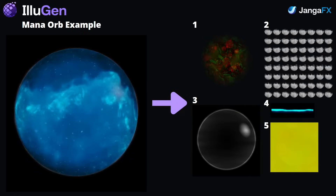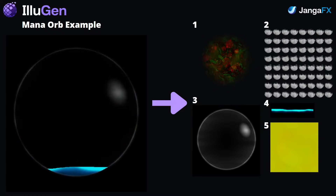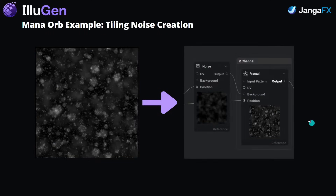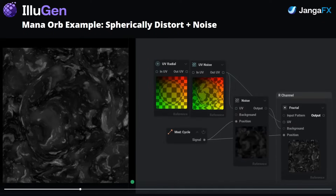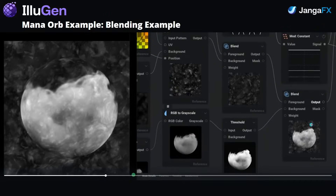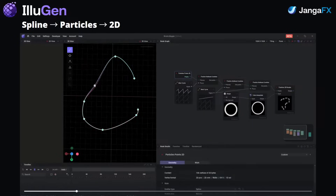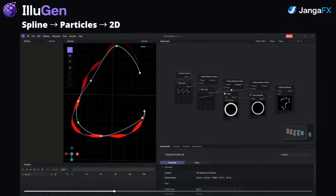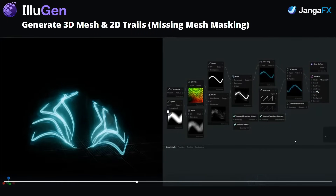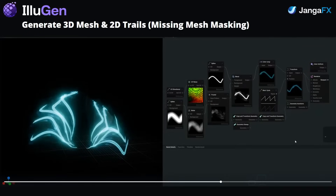During the stream, they ran through a few early examples. One was a mana orb built by importing a fluid flipbook from Embergen, distorting it with a UV map, and layering in some procedural textures and gradients — everything built and previewed inside the same tool. They also showed particles traveling along a spline like an energy trail, and a more complex example where they built stylized wings entirely inside Illogen, inspired by a Diablo 3 aesthetic.